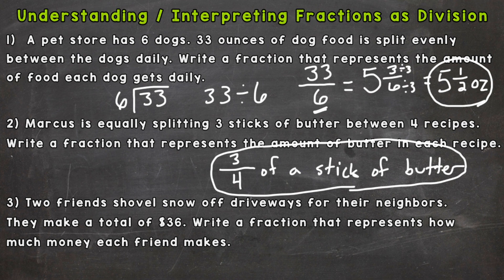Let's take a look at number 3. Two friends shovel snow off driveways for their neighbors. They make a total of 36 dollars. Write a fraction that represents how much money each friend makes.